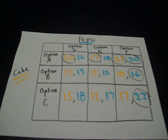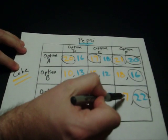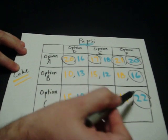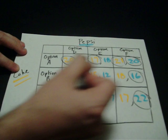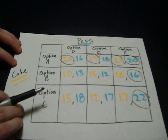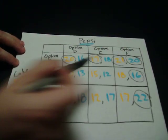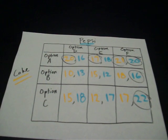And what I mean by that is that Coke couldn't go down here or here and get anything better, and Pepsi couldn't go side to side and get anything better. So the one that is circled twice, option A, option F, is what we call the Nash equilibrium point.